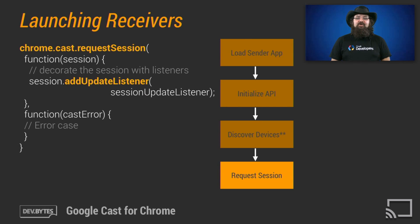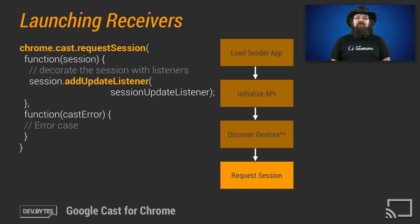The web sender should display the Cast icon when the receiver listener reports Cast receivers are available. Now that the application knows when to show a Cast icon to the user, we can explore how to request a session on a Cast receiver device. It's actually quite simple. The sender can call chrome.cast.requestSession and provide a success and error callback. The success callback will be passed a Cast session object that can be decorated with update listeners. The success callback is dependent on user action and may not be invoked.